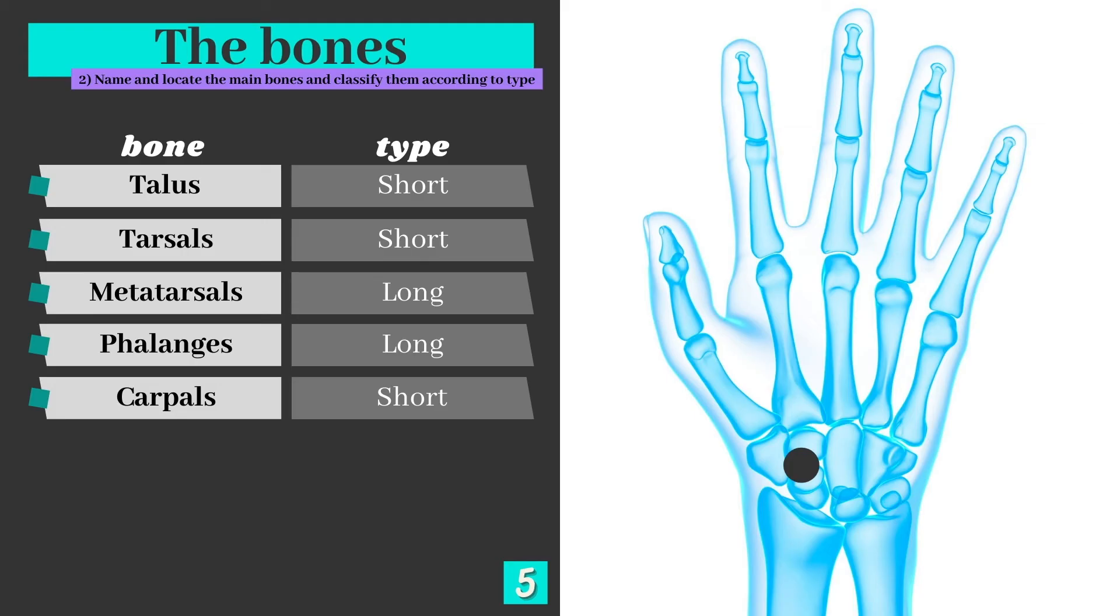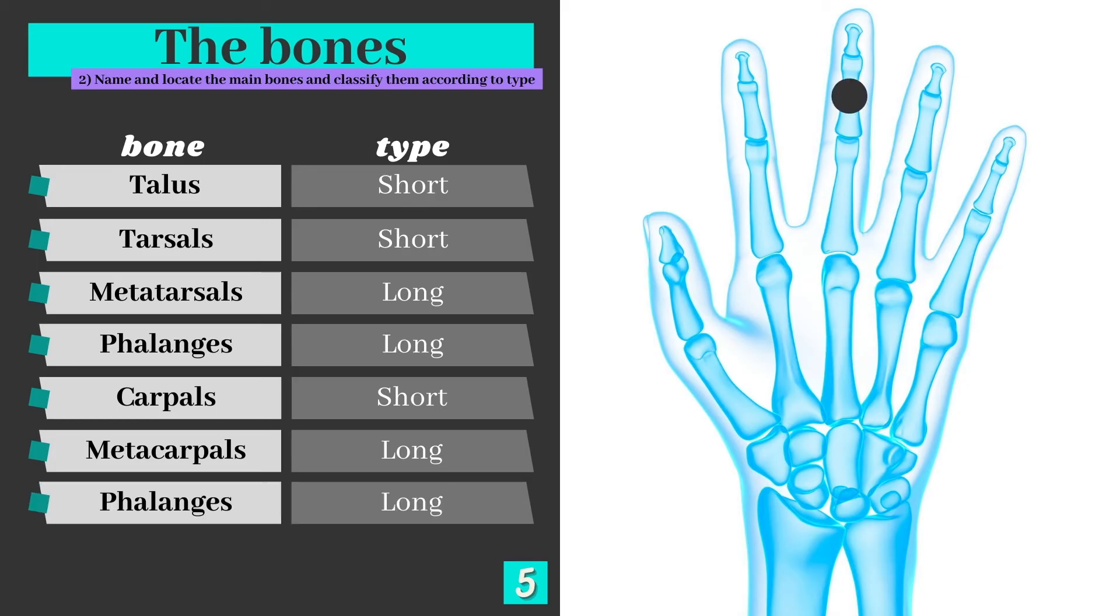Moving into the hand now, we have the carpals. Just like the tarsals, these are short bones, which sit at the top portion of the hand. Moving down, we have the metacarpals and then finally the phalanges again.